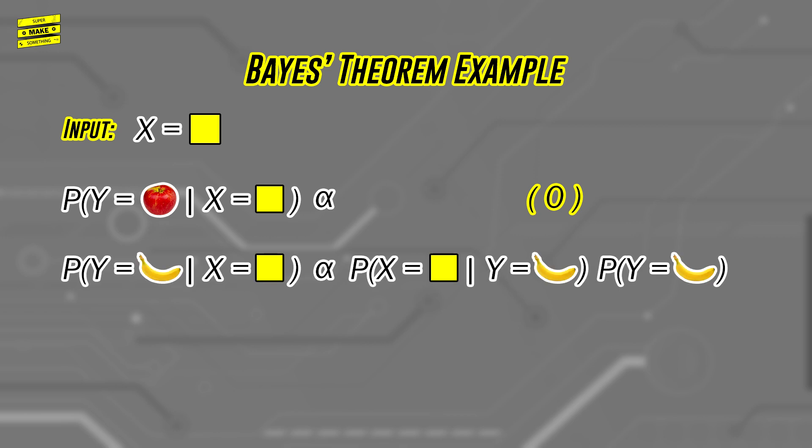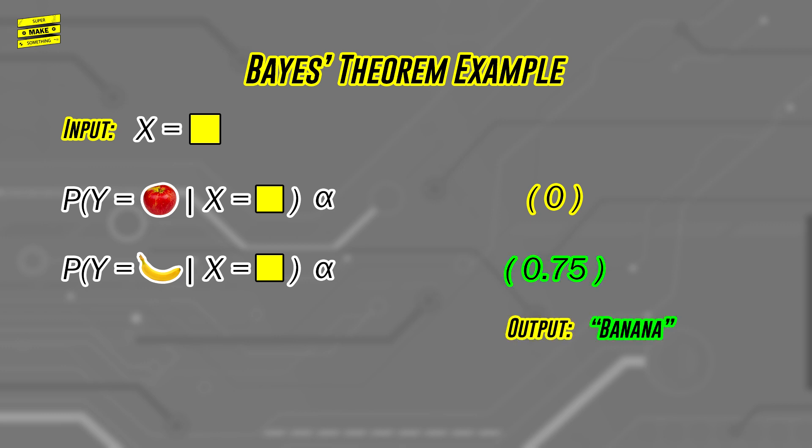Running the same calculation for a banana, we know that the probability that the color of a fruit is yellow given that it is a banana is 100%, and that the probability of randomly picking out a banana from the warehouse is 75%. Multiplying these together, we get a result of 0.75, which, while not the real world probability because we didn't divide it by the marginal probability, is definitely bigger than 0, so we can confidently say that the fruit the robot is looking at is a banana.